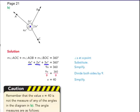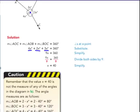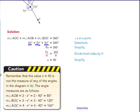Remember that the value x equals 40 is not the measure of any of these angles in the diagram. The angle measures are as follows. We just found x. It's not the measures of the angles. But if it did say, give the three angles, you would have to put that x into each expression. 2x would be 80, 3x would be 120, and 4x would be 160. And yes, 80, 120, and 160 does add to 360.